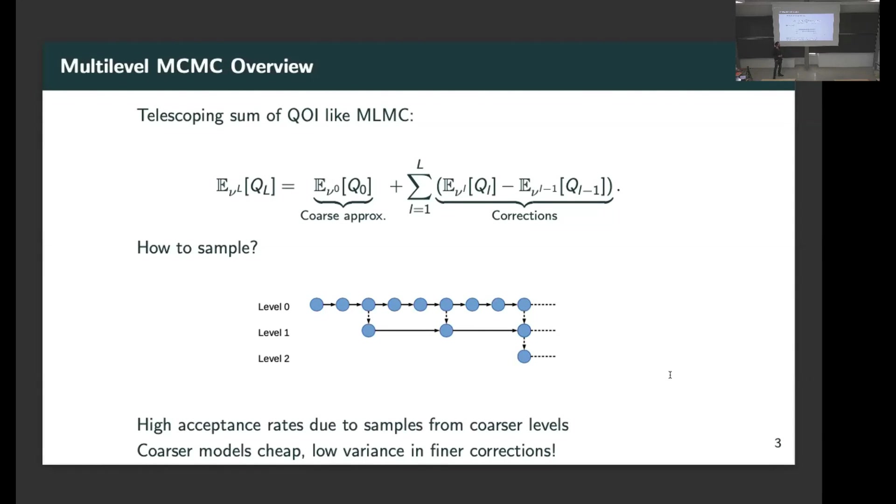The main difference comes from now pre-drawing samples, of course. So we can exploit that, for example, running chains on finer levels. We can use samples from coarse levels as informed proposals. Beyond that, you can think of it as multilevel Monte Carlo, essentially.